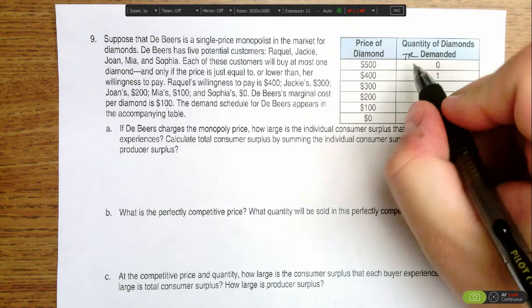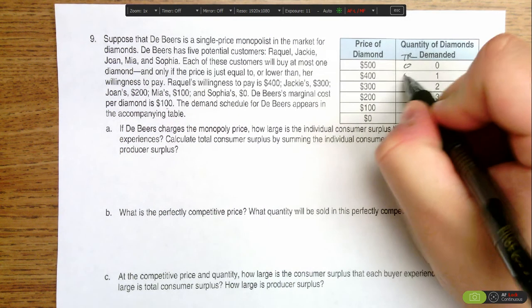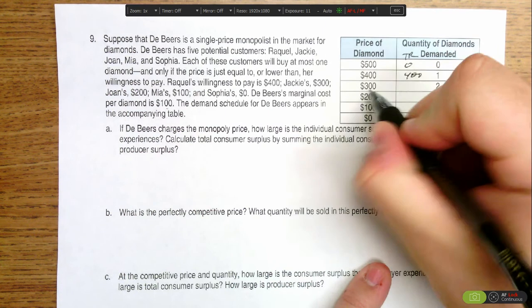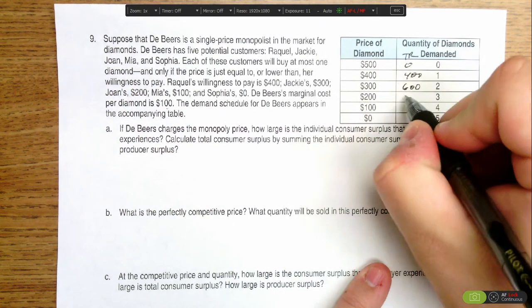So total revenue, if I sell zero diamonds, I'm making $0. If I sell one, they're selling for $400. If I sell two, they're $300 apiece, which means $600 in total revenue. If I sell three, they're $200 apiece, so $600 for total revenue.